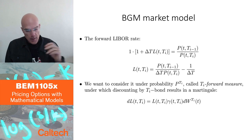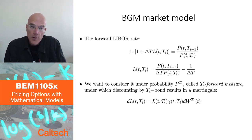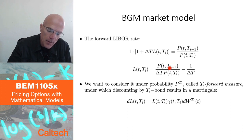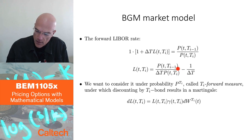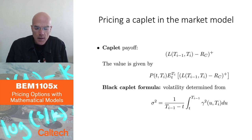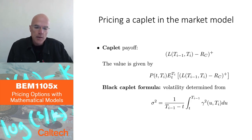A Girsanov-type theorem tells you that this is possible — there exists a probability such that when you discount by the bond price, you get a martingale. That's what we are doing here: discounting the T_i minus 1 bond by the T_i bond. So consider pricing a call option on the LIBOR rate, which is called a caplet.